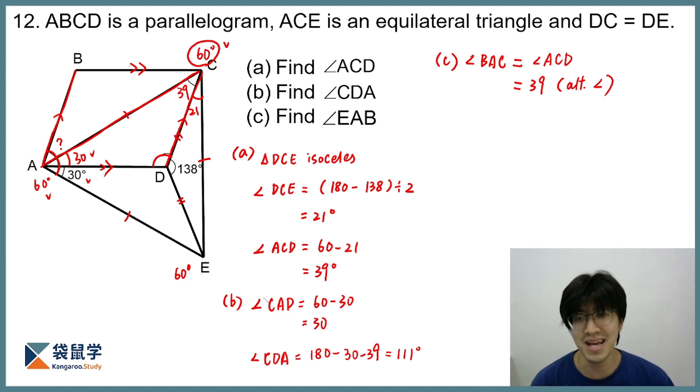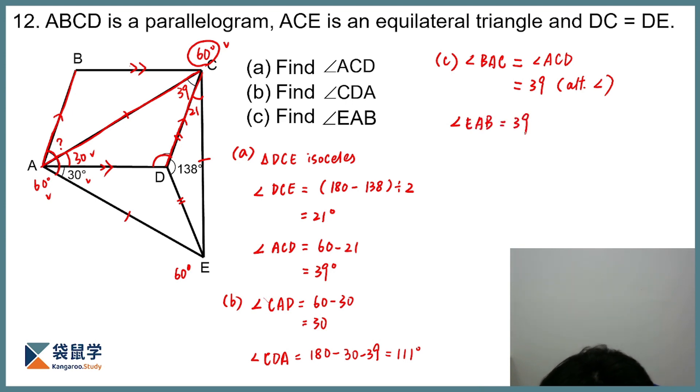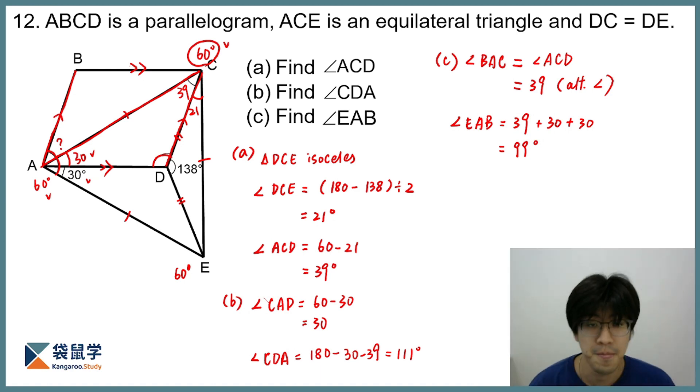And then having found BAC, we have actually solved the problem. So now we simply need to take... So for EAB, we simply need to take the three parts, combine them. 39, plus 30, plus 30, and then we will get 99 degrees. So that's solved the third part.